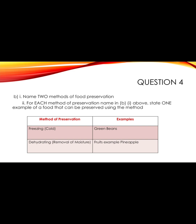For freezing, I listed green beans, but you can also freeze carrots, broccoli, cauliflower, fruits, and meats. For dehydrating, I selected fruits — for example, pineapples. Other foods can also be dehydrated: grapes become raisins, papaya can be dehydrated, and milk can be dehydrated to get powdered milk.